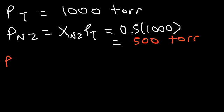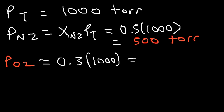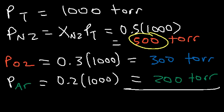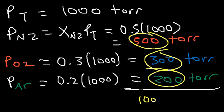The partial pressure of oxygen is the mole fraction of O2, which is 0.3, times the total pressure of 1000, giving 300 torr. The partial pressure of argon is the mole fraction of argon, 0.2, times the total pressure, giving 200 torr. If we add all the partial pressures — 500 plus 300 plus 200 — we get 1000 torr, the total pressure, showing how all the equations work together.